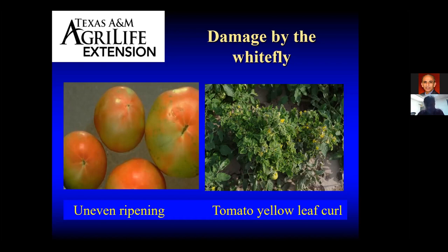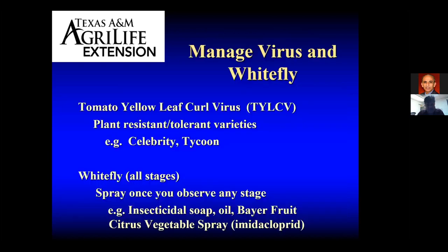So what can we do? Obviously, we want to manage it. The reason I included that abbreviation TYLCV is that's what you're going to want to see in your seed packets or the varieties of tomatoes that you grow. You're going to look for that abbreviation to see if they have a tolerance or resistance. There are some tomatoes out there commercially available to homeowners that do have some resistance and tolerance. Some that come to mind easily are Celebrity and Tycoon. Tycoon is a superstar plant this year, and Celebrity in past years has been a superstar plant as well, partly because they perform well all over Texas and they have tolerance or resistance to the tomato yellow leaf curl virus.